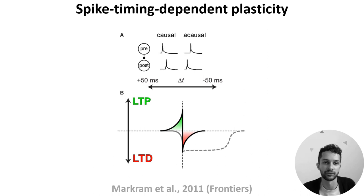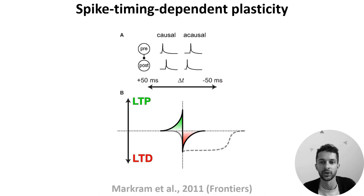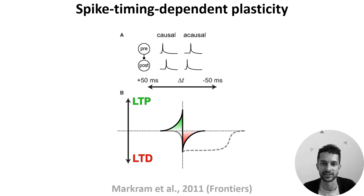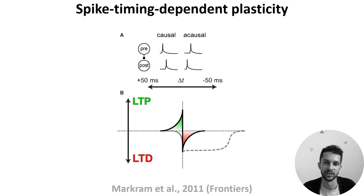To expand on that, let's consider a pair of neurons. Panel A shows if the presynaptic neuron spikes tend to occur before or after the postsynaptic neuron — whether their relationship is causal or acausal. Panel B shows how this synapse's strength on the y-axis will be adjusted depending on the difference in spike timing between the two neurons. If the relationship is causal — pre precedes post — the strength will be increased or potentiated.